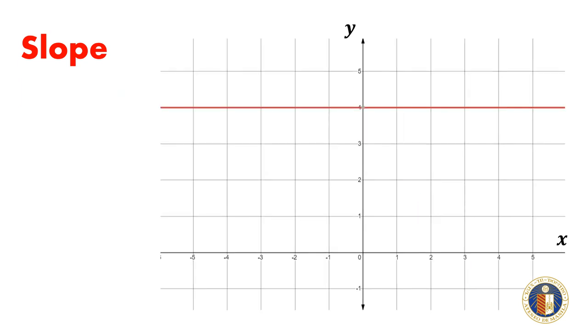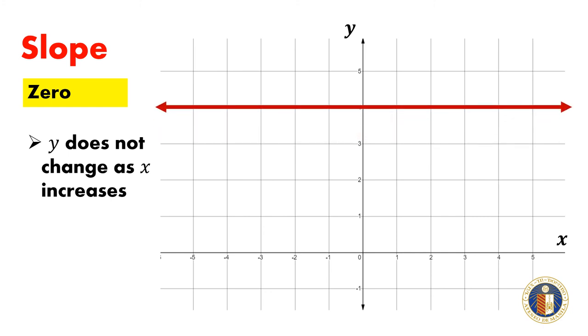If the slope of the line is 0, y does not change as x increases. The graph is a horizontal line.